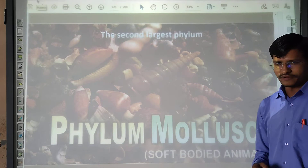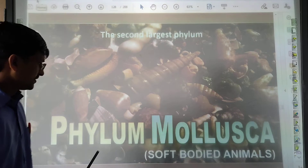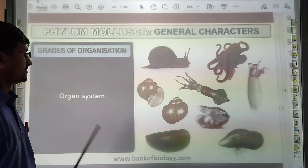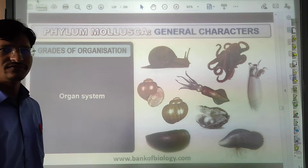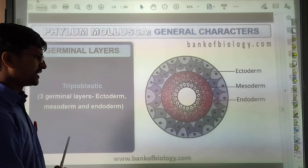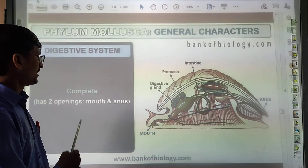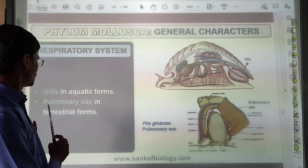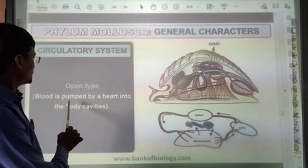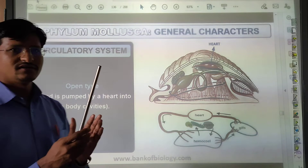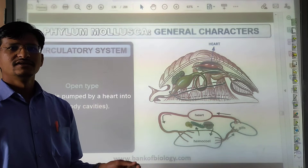Mollusca are soft-bodied animals. They have organ system level of organization. They have a very tough outer covering — a calcareous shell. They are triploblastic. They are coelomate. They are mostly aquatic. The digestive system is complete. Respiratory system: in aquatic forms they use gills; in terrestrial forms they use pulmonary sacs. The circulatory system: blood is pumped by the heart into the body cavity — an open circulatory system.